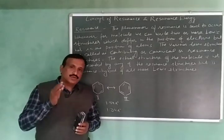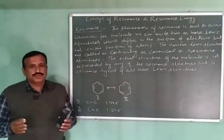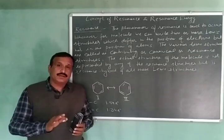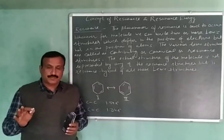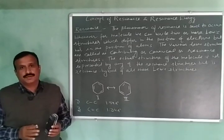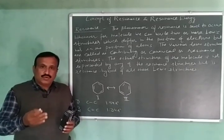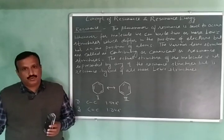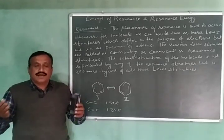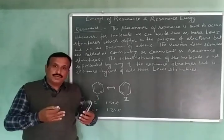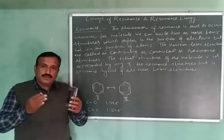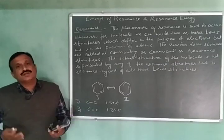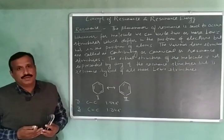This concept of resonance was introduced to explain the properties of the compounds which cannot be represented by a single electronic structure or single Lewis structure. And in such cases, we write two or more than two Lewis structures for a compound. The actual structure of the compound lies somewhere in between these various structures, and that structure is called as resonance hybrid.